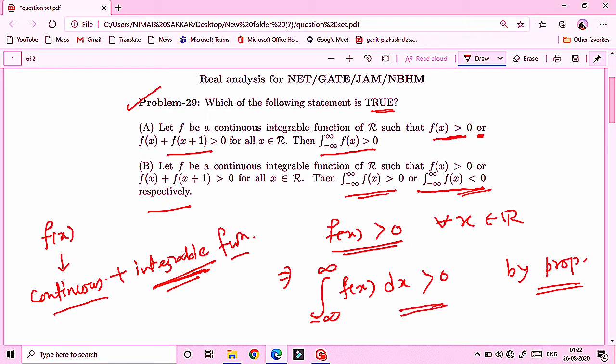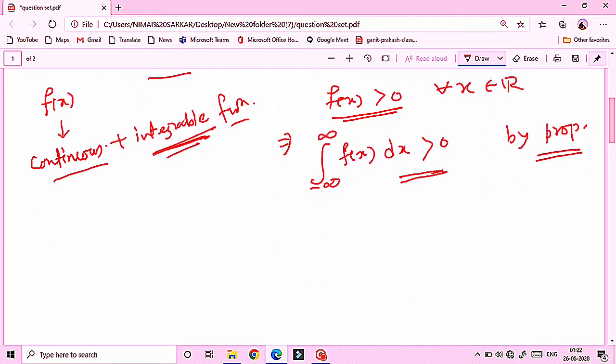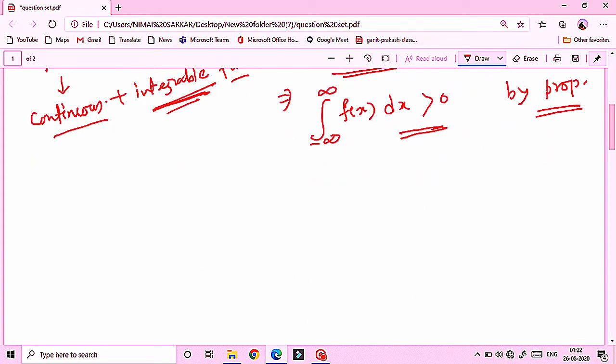But the second condition is given: that is fx plus f of x plus 1 is greater than 0 for all x belongs to R. This is the second condition.